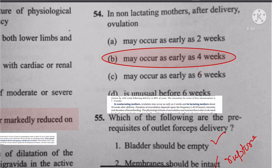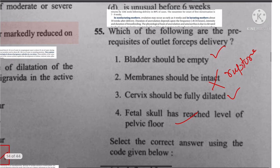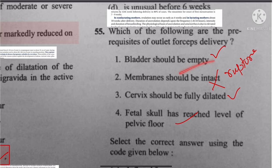Question 55: Prerequisites for outlet forceps delivery — the bladder should be empty, cervix fully dilated, fetal skull at the level of the pelvic floor, and membranes should be ruptured, not intact.